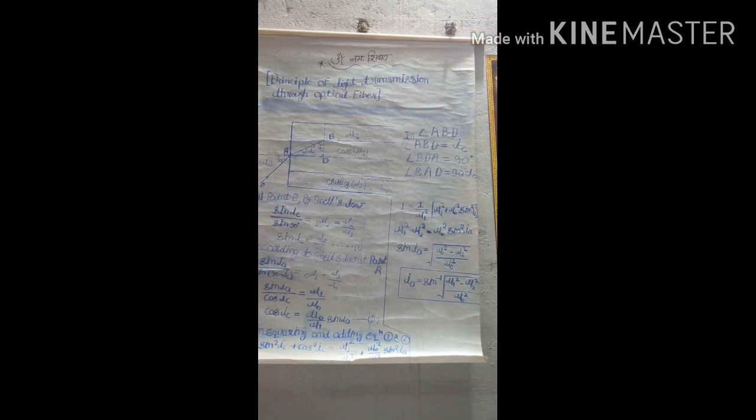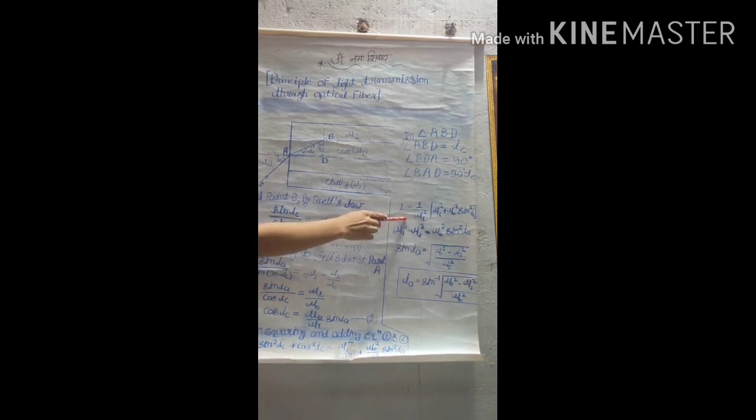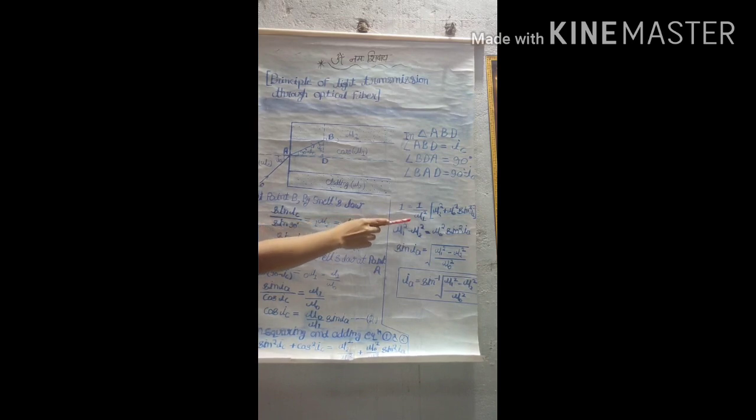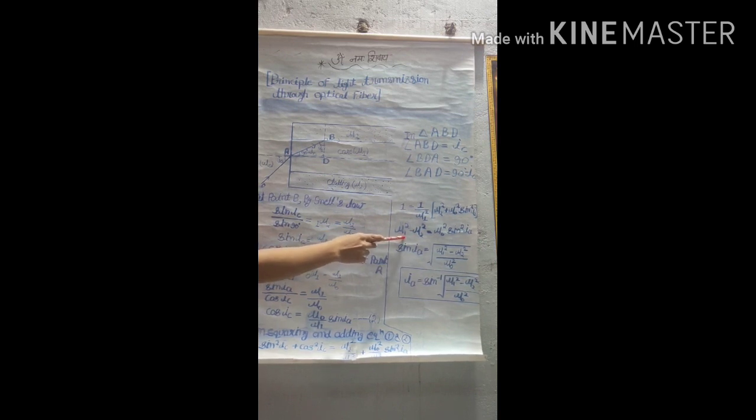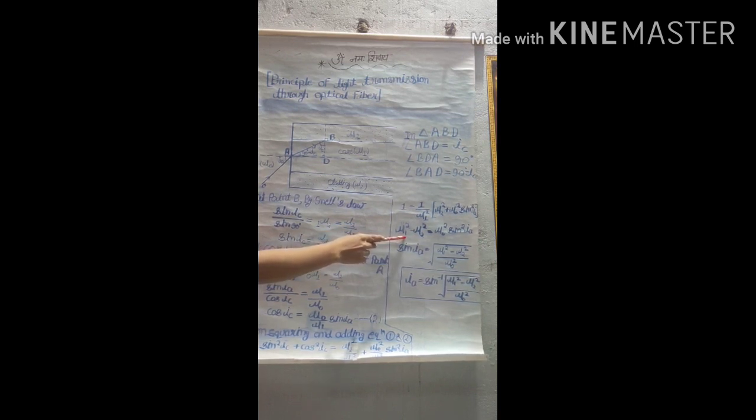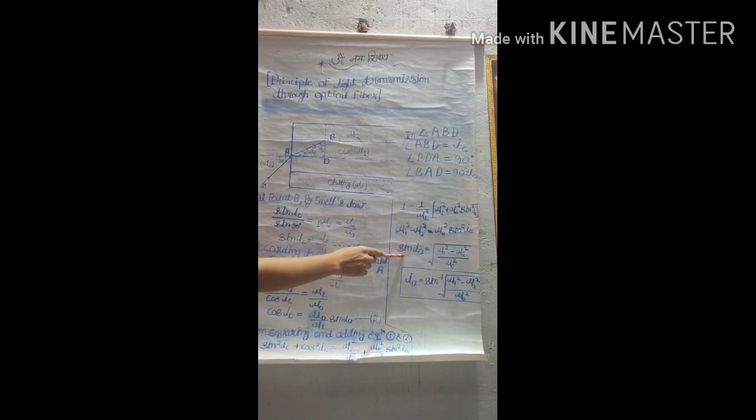Now by trigonometry, we know that the value of sin squared theta plus cos squared theta equals 1. So from here we get 1 equals 1 upon mu1 squared (mu2 squared plus mu0 squared sin squared IA). By simple rearranging, we get mu1 squared minus mu2 squared equals mu0 squared sin squared IA. Sin IA equals square root of (mu1 squared minus mu2 squared) upon mu0 squared.